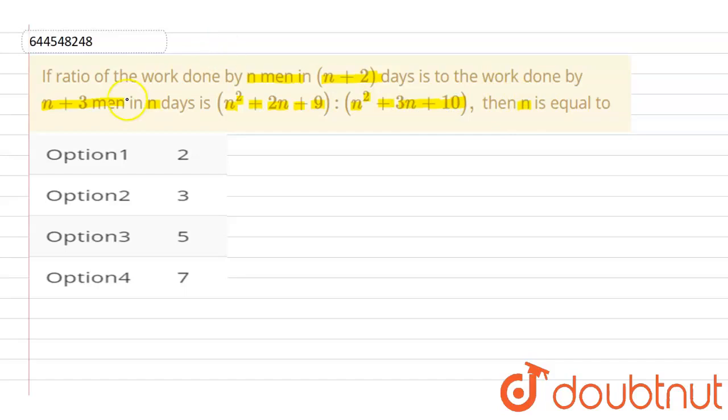Now see, it is given that the ratio of work done by n men in n+2 days to n+3 men in n days is equal to this expression.